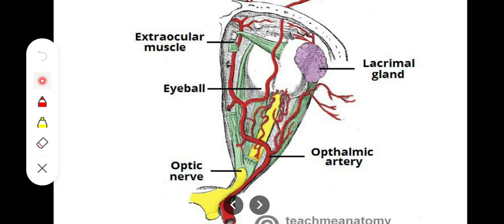The optic nerve contains approximately 1.2 million myelinated fibers, of which about 53% decussate at the optic chiasma level, crossing to the other side, while the remainder are uncrossed. The optic nerve is not a true nerve because it does not originate from a nucleus — unlike other cranial nerves such as the oculomotor nerve with its midbrain nucleus. It is simply a prolongation of brain tissue, which is why both the olfactory and optic nerves are considered not true nerves.